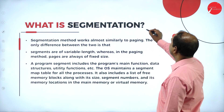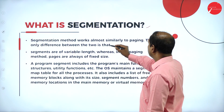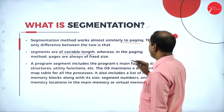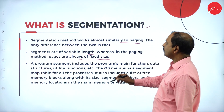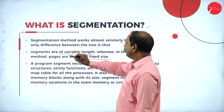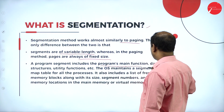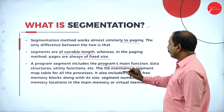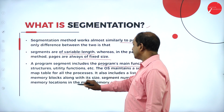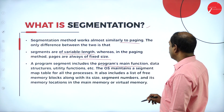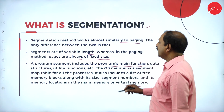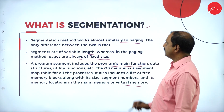What is segmentation? Segmentation works almost similar to paging. The only difference is that segments are of variable length, whereas the paging method has fixed-size pages. The program segment includes the program's main function, data structure, utility functions, etc. The OS maintains a segment map table for all processes, which also includes a list of free memory blocks along with size, segment number, and so on. This is segmentation — it differs from paging and includes detailed information about processes.